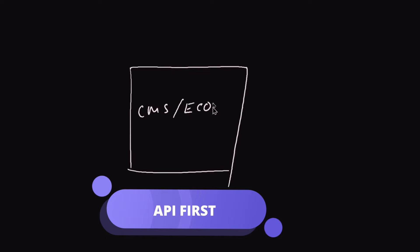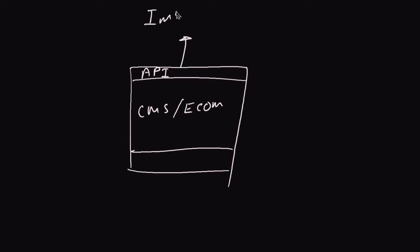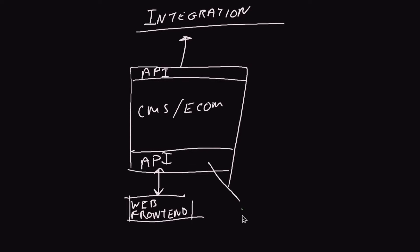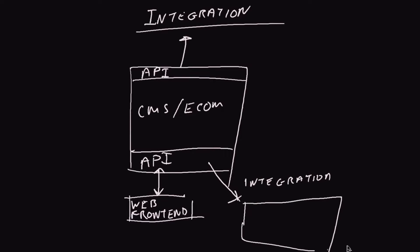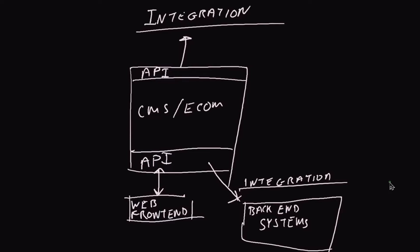This is where the API-first component of MACH architecture comes in. What it means is, before you even start thinking about building a user interface, a connector, or a CLI tool, you think about the APIs first. API first means you can't have half the system with nice microservices and APIs while another part is only available through a web front end. API first means complete coverage across the entire system — everything you do in the front end, you can do through an API — making integration much simpler through a standard interface.